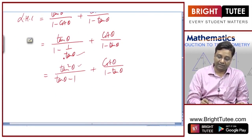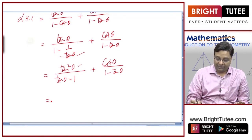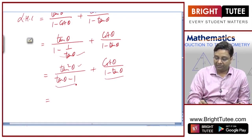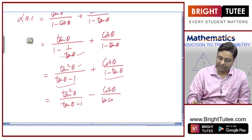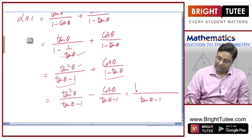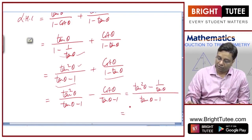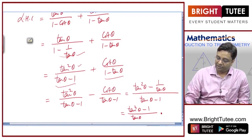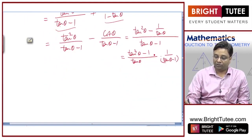Now the denominators are tanθ − 1 and 1 − tanθ, which differ by sign. Rewriting with a common denominator (tanθ − 1), the second term becomes −cotθ/(tanθ − 1). Combining: (tan²θ − cotθ)/(tanθ − 1). Replacing cotθ with 1/tanθ gives (tan³θ − 1)/(tanθ · (tanθ − 1)).